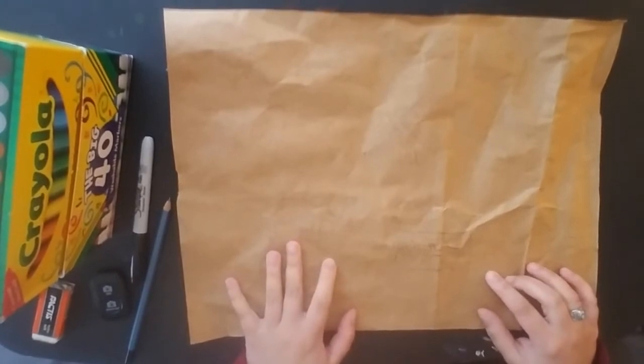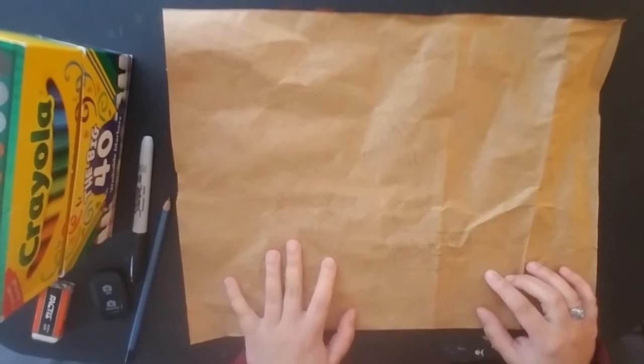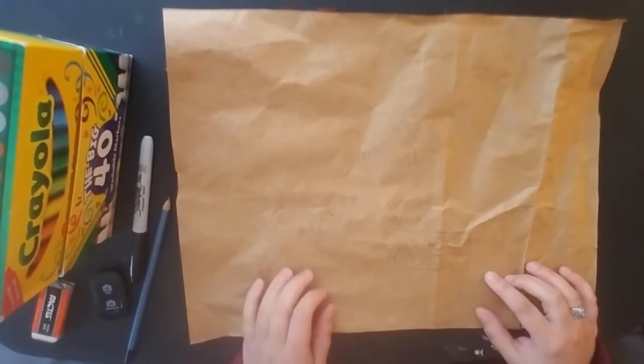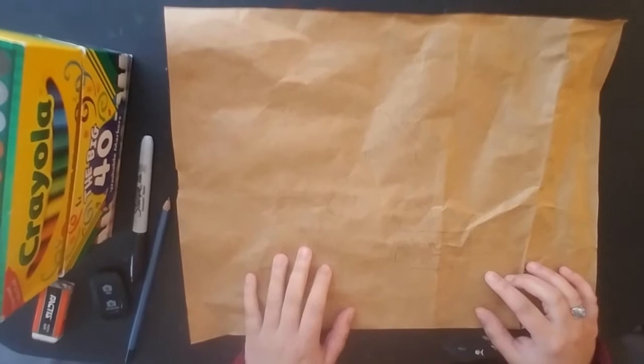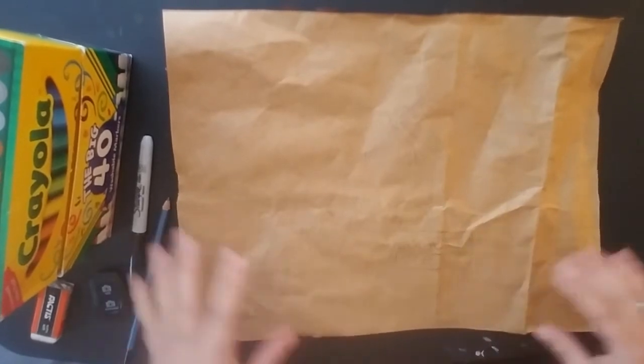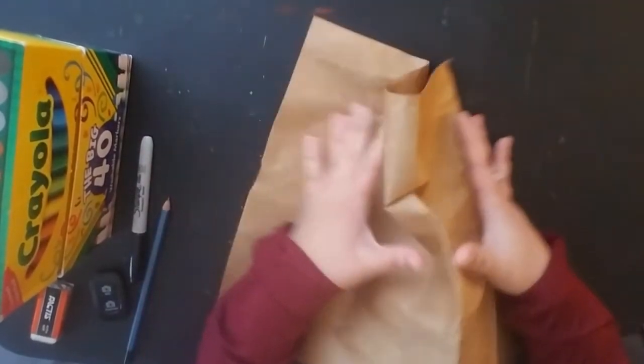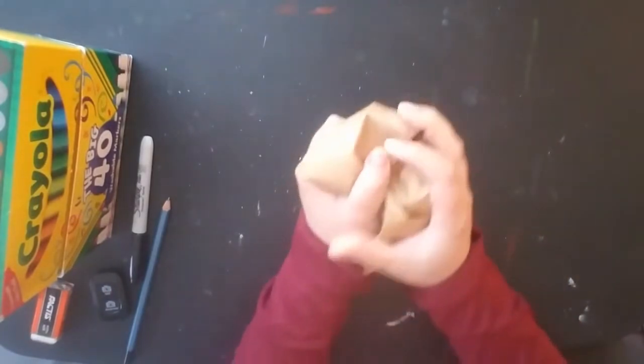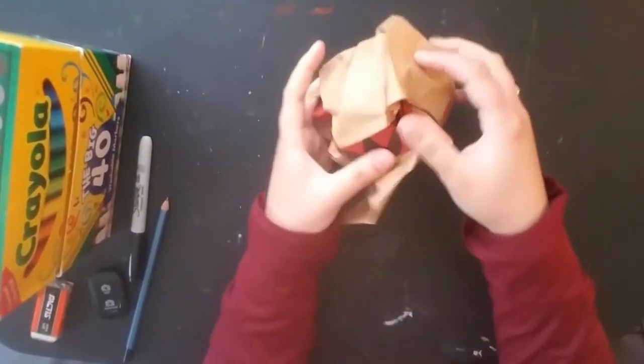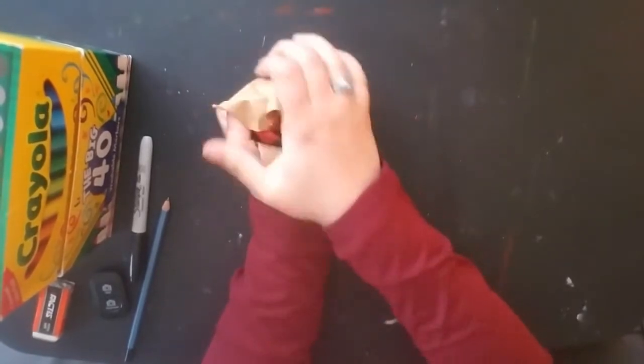The first thing I want to do is create texture. Texture is when something looks like it feels a certain way. Rocks are very rough, so I'm going to take my paper, crumble it up because I want that rough, crinkly texture of rock.